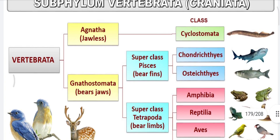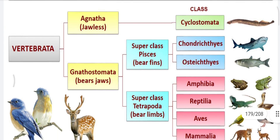Vertebrata has two subdivisions: Agnatha and Gnathostomata. Agnatha means jawless organisms. It has the class Cyclostomata and Ostracodermi, which are the extant ones. Gnathostomata have a base jaw and have two superclasses: Pisces and Tetrapoda.